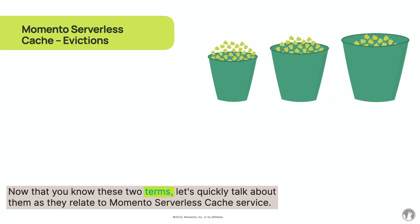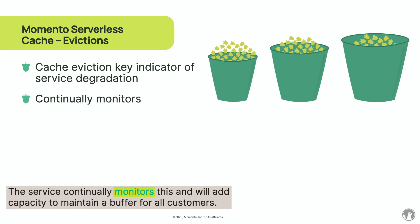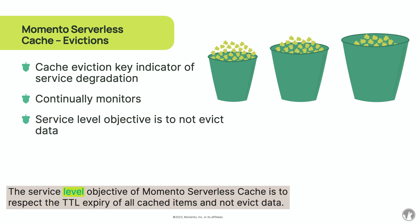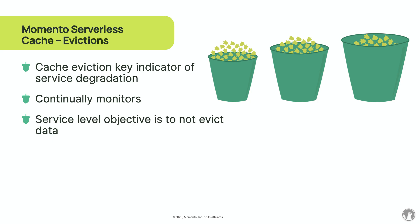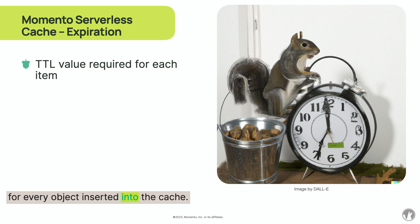Now that you know these two terms, let's quickly talk about them as they relate to Momento serverless cache service. Momento considers cache evictions to be a key indicator of service quality degradation. The service continually monitors this and will add capacity to maintain a buffer for all customers. The service level objective of Momento serverless cache is to respect the TTL expiry of all cached items and not evict data. For cache expiration, Momento serverless cache requires a time to live value in seconds for every object inserted into the cache. There are two places to set that value.